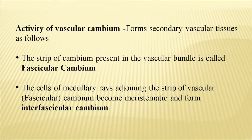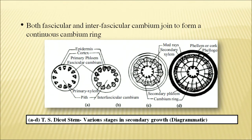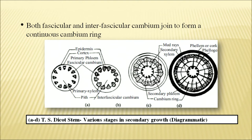The activity of the vascular cambium produces secondary vascular tissue. The strip of cambium in the vascular bundle is called fascicular cambium — cells having the power to divide. In figure A, a dicot stem shows vascular bundles arranged in a ring. In figure B, the cambium cells join from the medullary rays, grow out, and meet the next layer. In figure C, medullary rays and secondary xylem are cut out with the help of vascular cambium, new xylem is formed, and new phloem is formed.